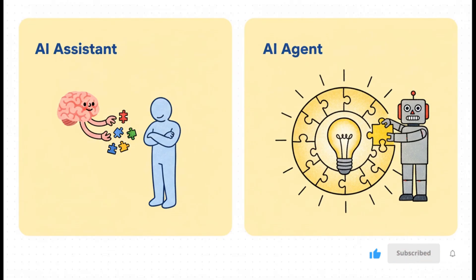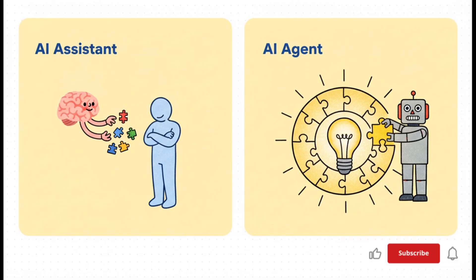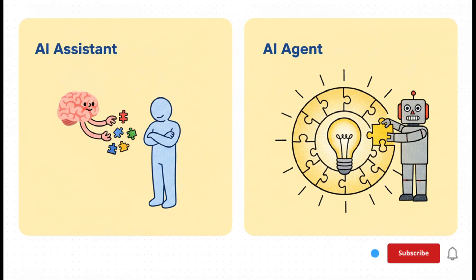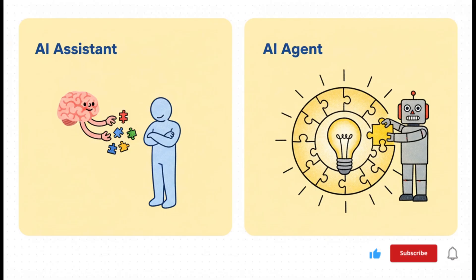And that right there is the huge difference between an AI assistant and an AI agent. This slide just lays it out perfectly. An assistant is like a partner — it helps you out. But an agent is a worker. It acts on your behalf to get a goal done. An assistant gives you the puzzle pieces, but an agent takes the box, looks at the picture on the front, and puts the whole puzzle together for you.